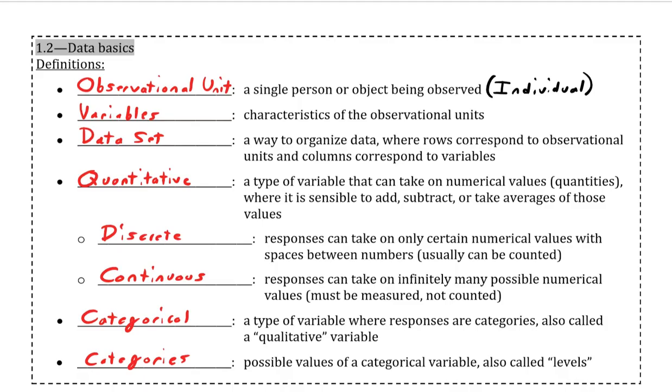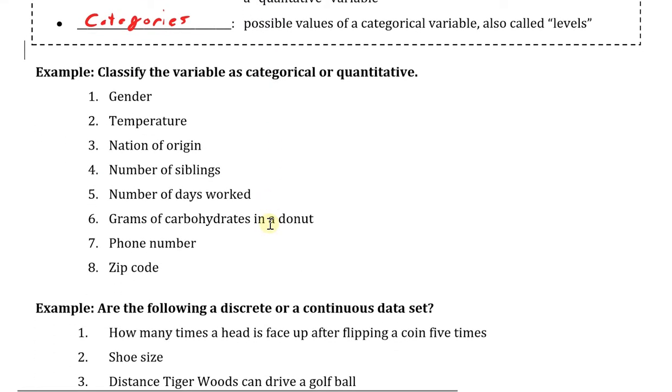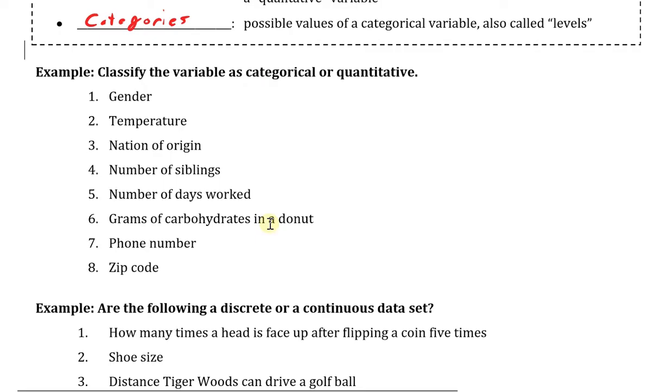Now let's look at some examples of the differences between quantitative and categorical, and discrete versus continuous. For our first example, it's going to ask us to classify the variables as either categorical or quantitative, which I will do with a C for categorical and a Q for quantitative.